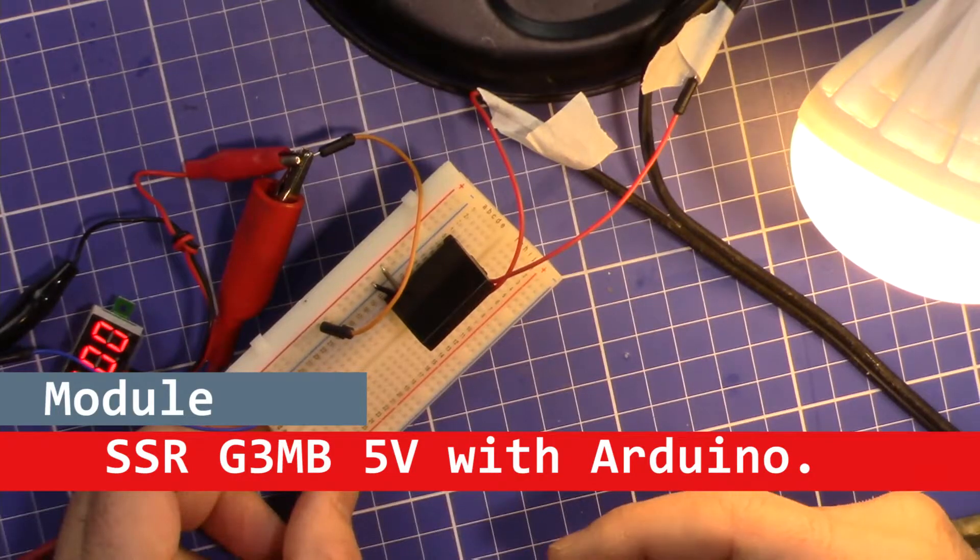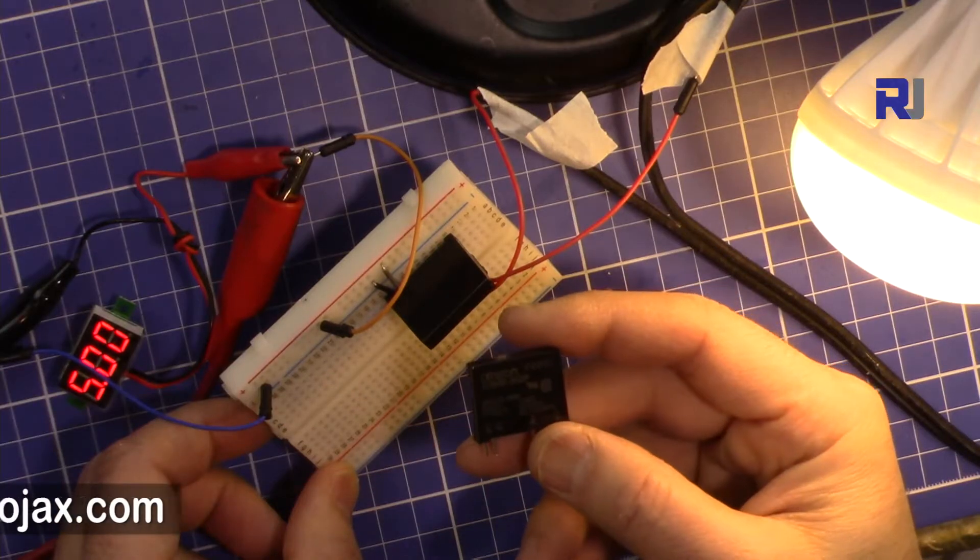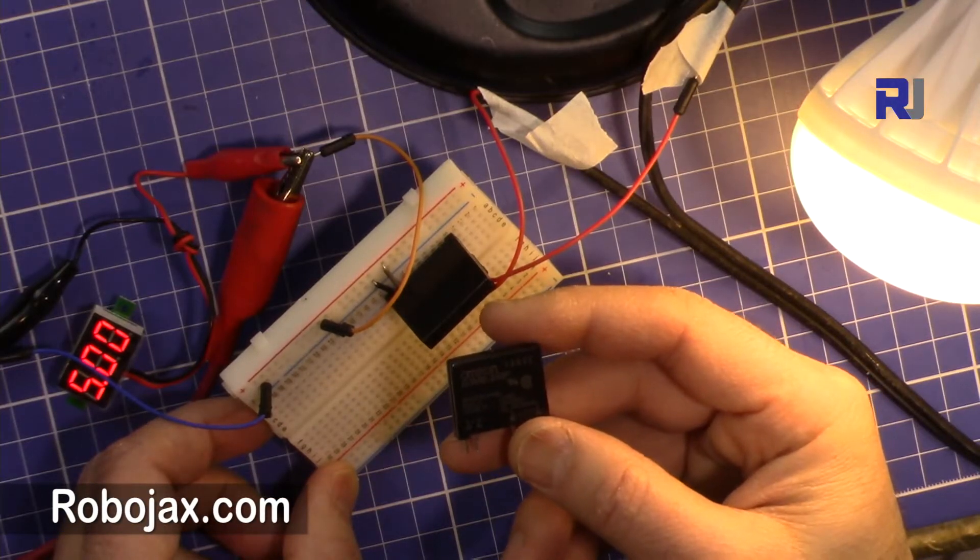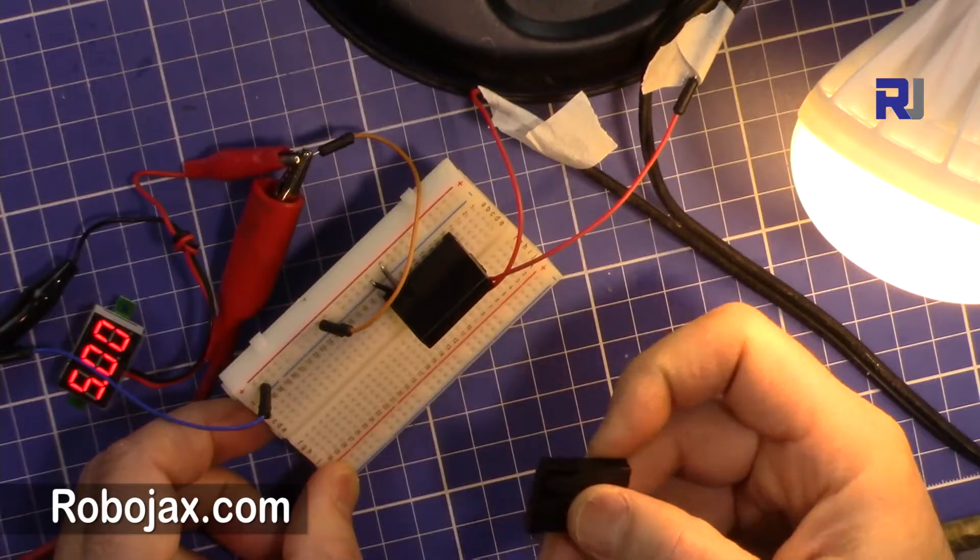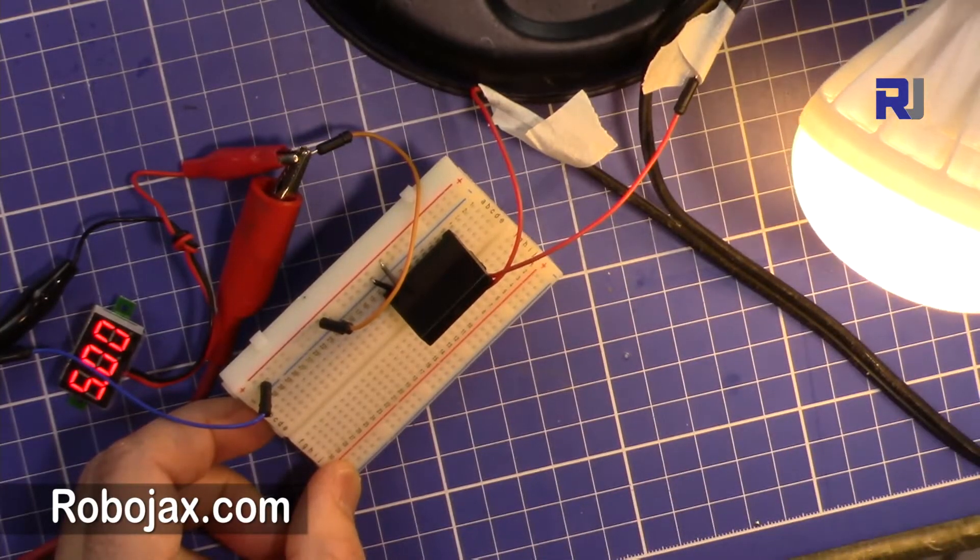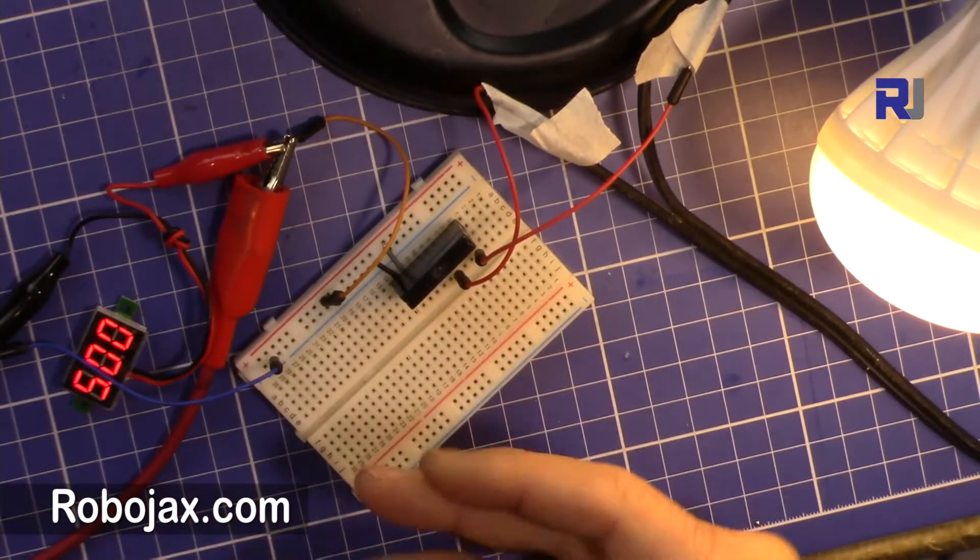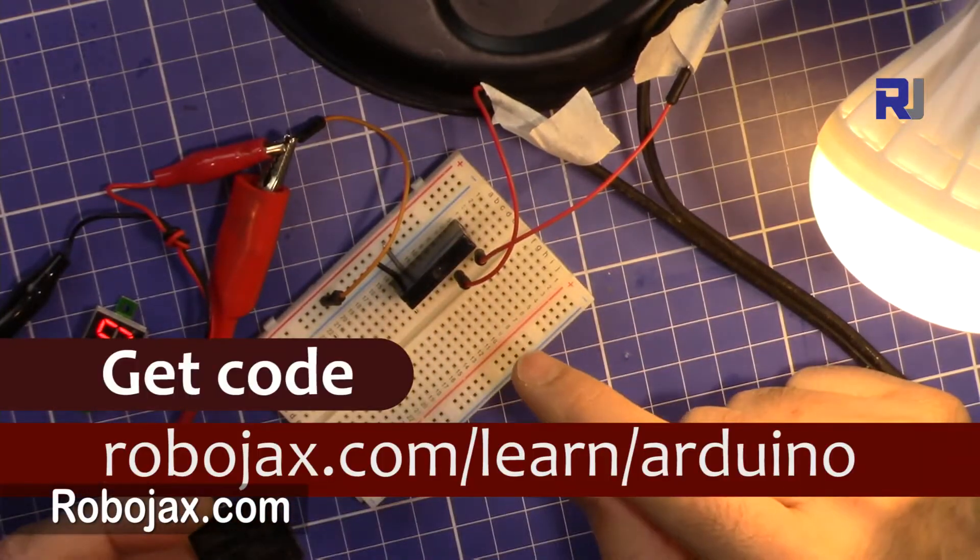Hi, welcome to a video tutorial from Robojax. In this video we are going to see how we can use this solid-state relay, the Omron G3MB. We are going to see how we can use this to control an AC bulb like this without Arduino and also with the Arduino.